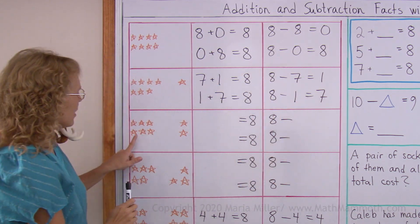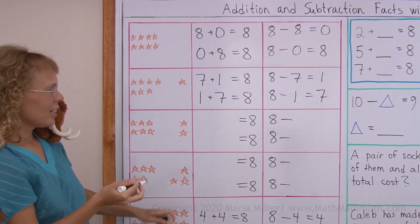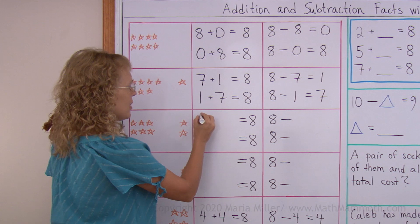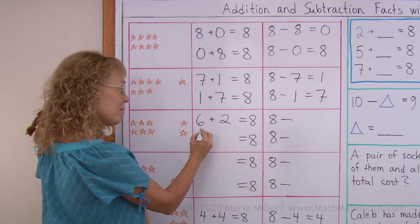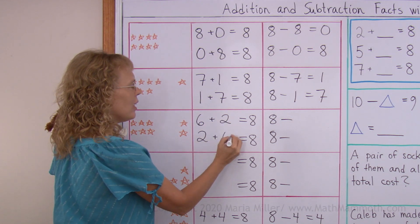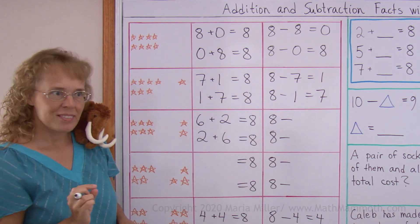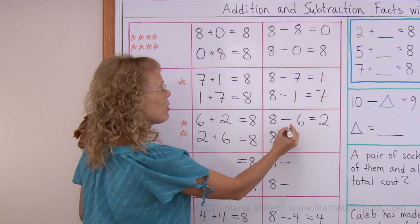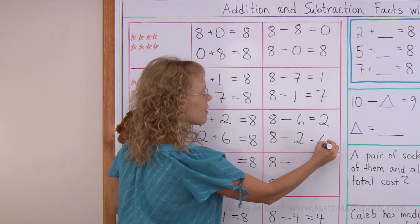And now this fact family, 6 and 2. Can you tell what additions go here? 6 and 2 makes 8, and then 2 and 6. And then what subtractions go here? 8 minus 6 equals 2, and 8 minus 2 equals 6. Right.